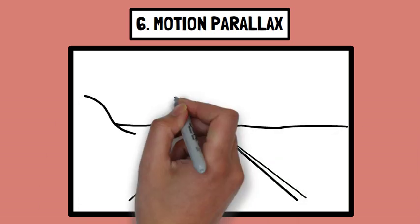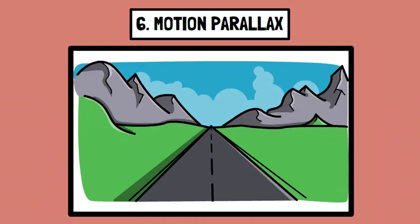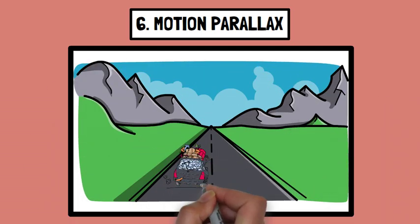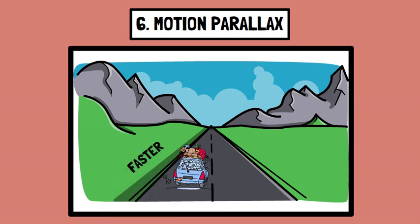Number six, motion parallax. When you move, objects closer to you appear to move faster than those farther away. For example, while driving, nearby trees seem to whiz by whereas distant mountains barely appear to move.